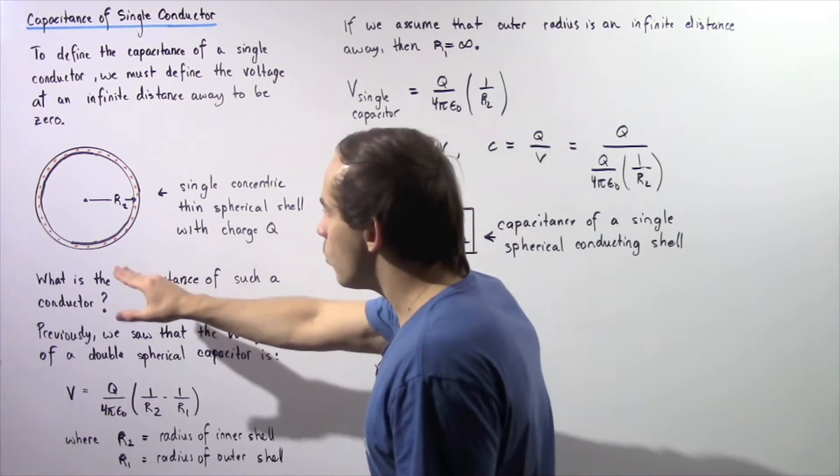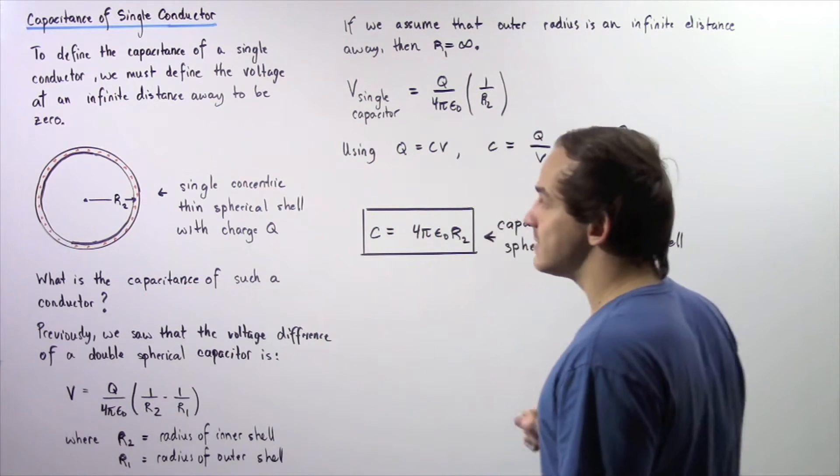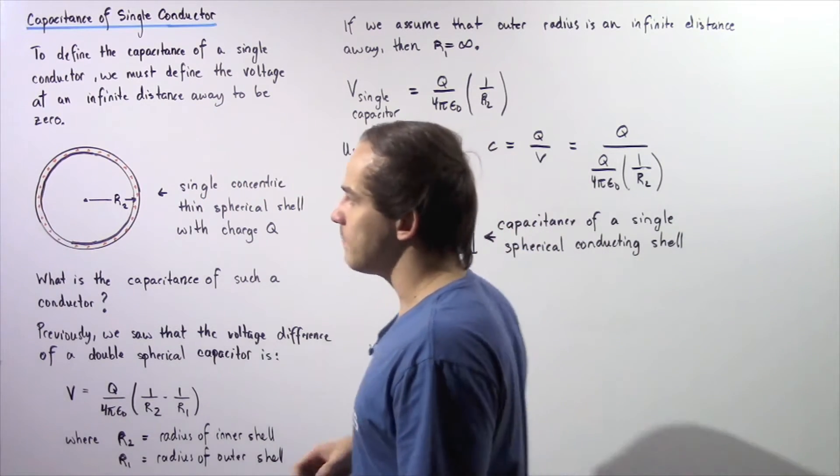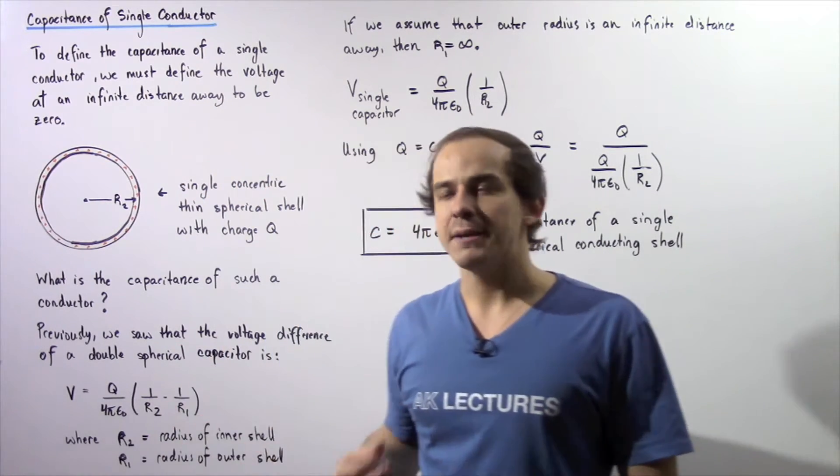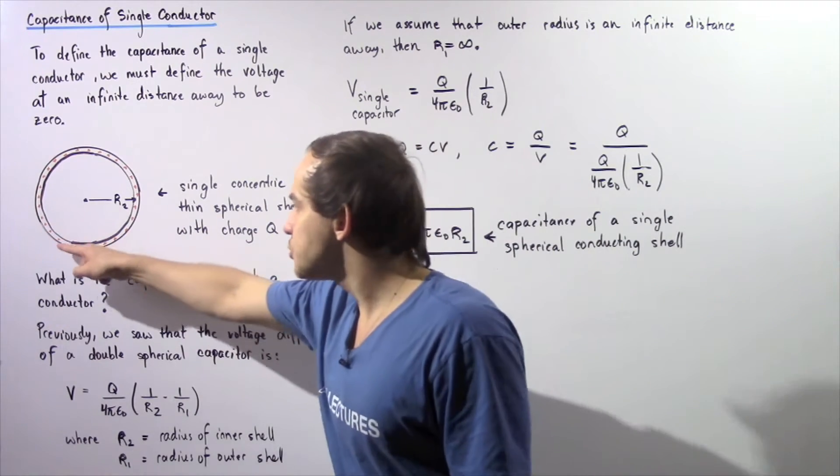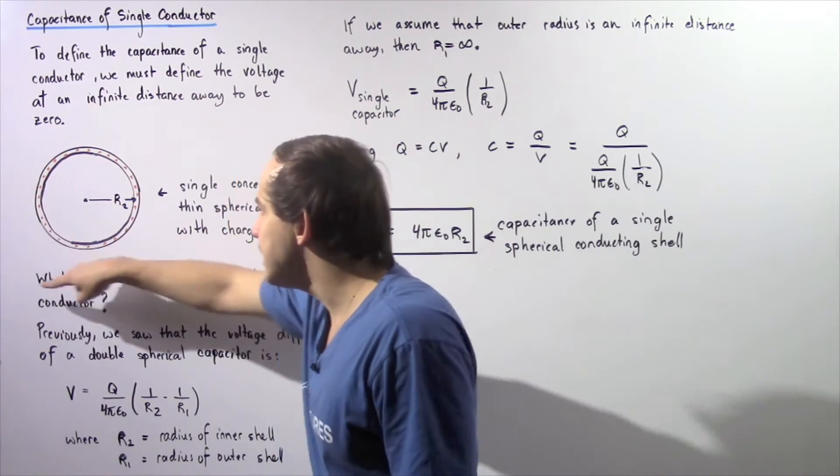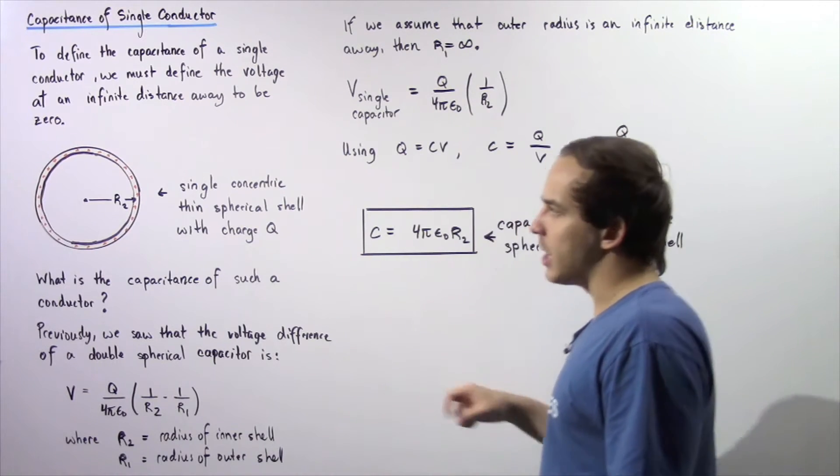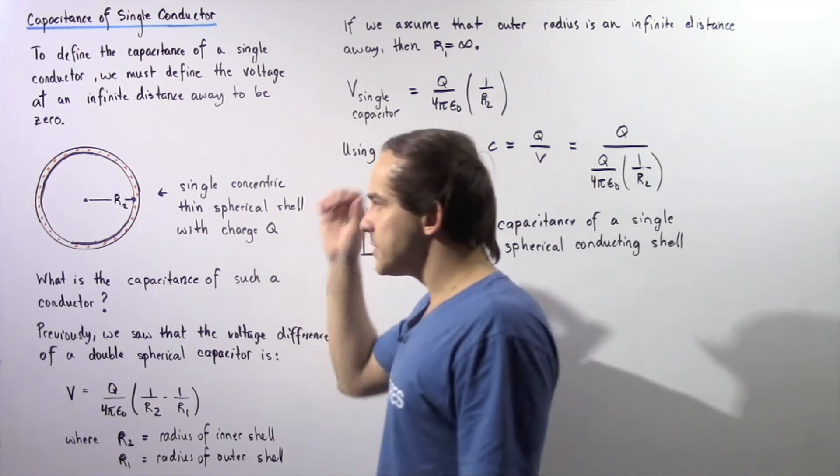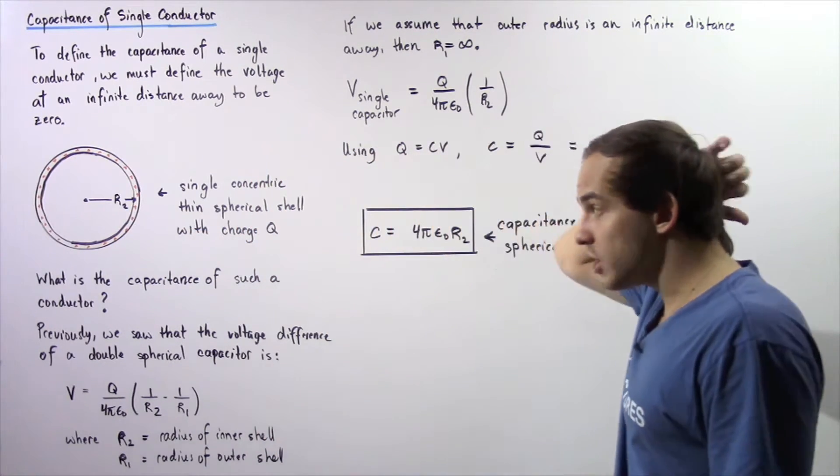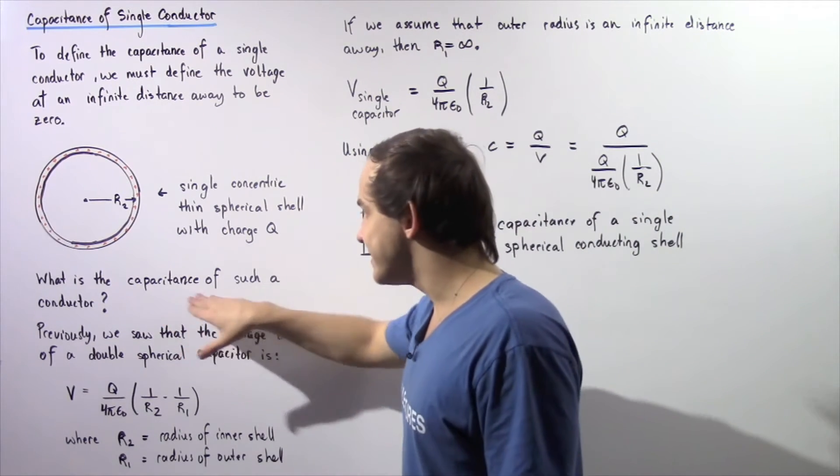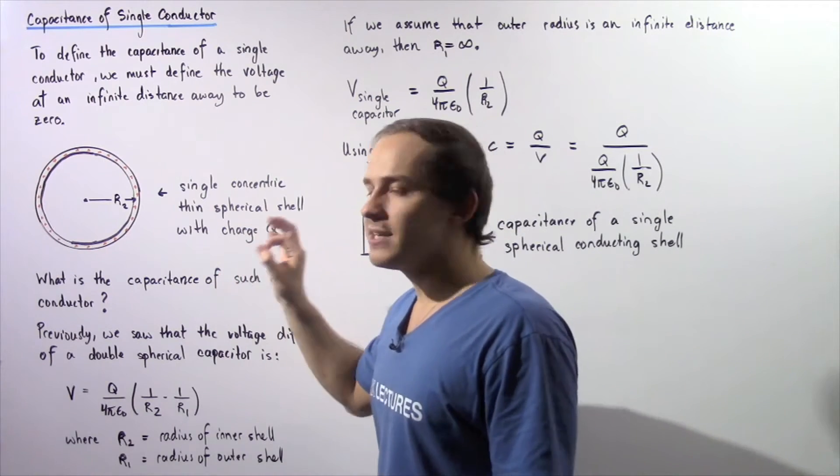Let's suppose we want to define what the capacitance is of a single concentric thin spherical shell with a charge given by positive q. This charge is distributed evenly and uniformly on the surface of that spherical shell. The radius of this particular shell is given by R2, and we want to find what the capacitance is of such a conductor.